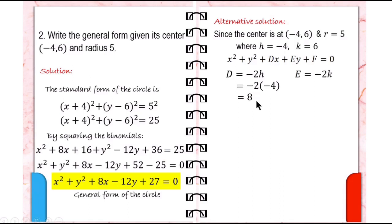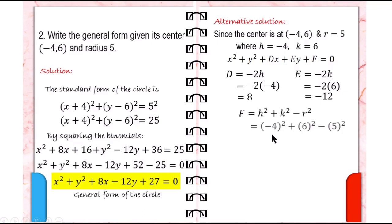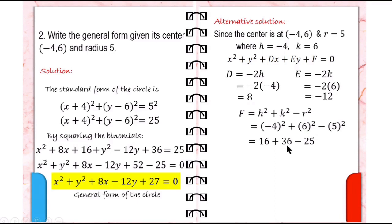Next, solve for e, which equals negative 2k. Replace k with 6 and simplify: negative 2 times 6 is negative 12, so e equals negative 12. Then solve for f: replace h with negative 4, k with 6, and r with 5. Negative 4 squared is 16, plus 6 squared is 36, minus 5 squared which is 25. So 16 plus 36 is 52, minus 25 is 27.